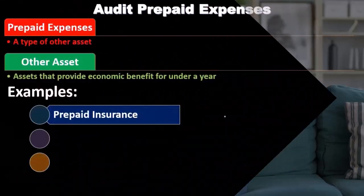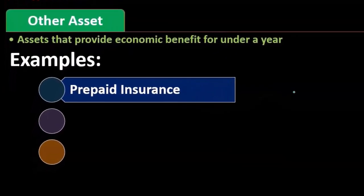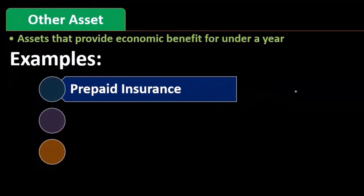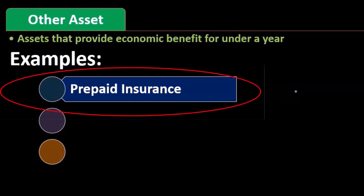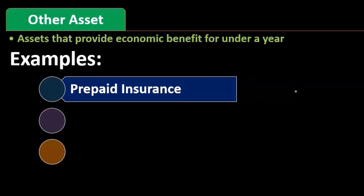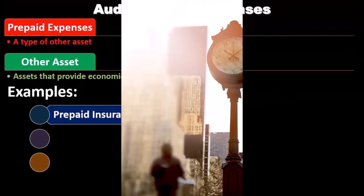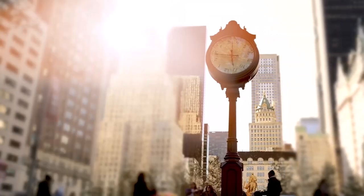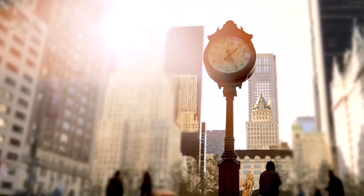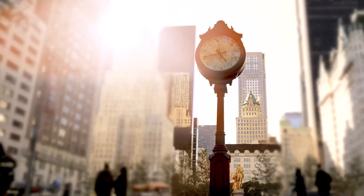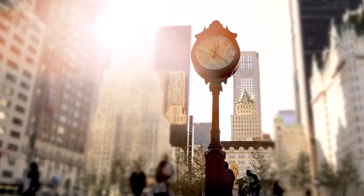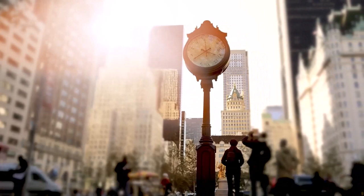Insurance is the classic example because whenever we pay for insurance, the definition of insurance means that we're buying coverage for something that's going to be insured in the future. Therefore, we haven't received anything at the point in time that we paid for it. We're going to be receiving the benefit — the coverage against risk — in the future.